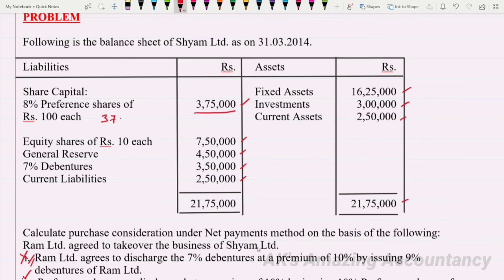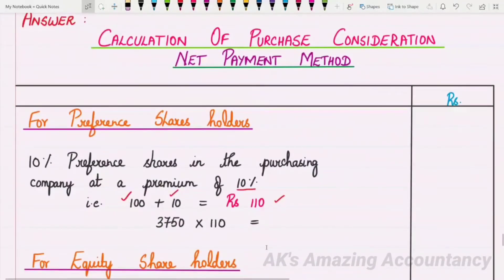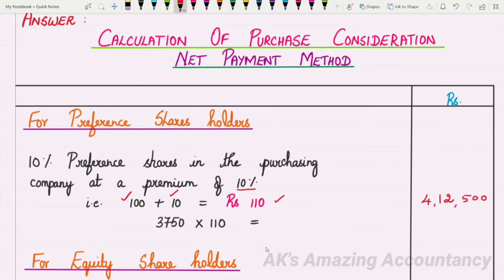So 3,750 preference shares will be issued at ₹110 each. Therefore, 3,750 × ₹110 = ₹4,12,500. This is the amount with respect to preference shareholders.